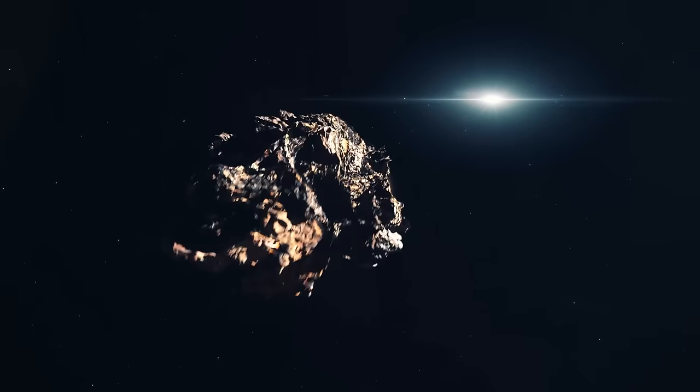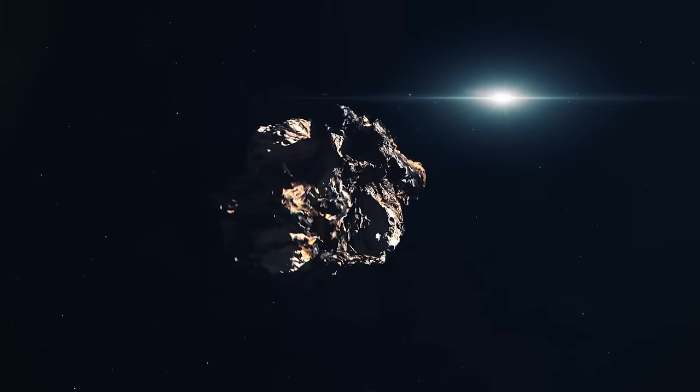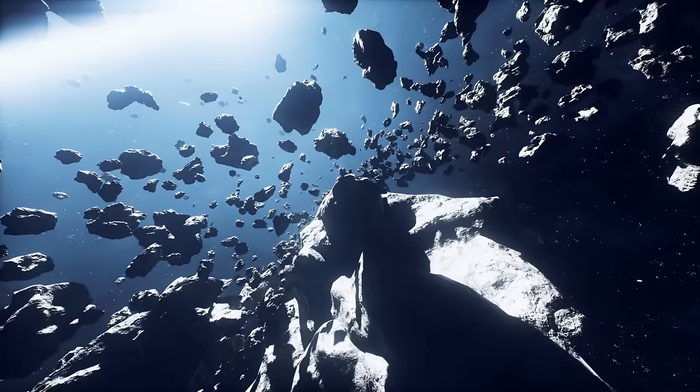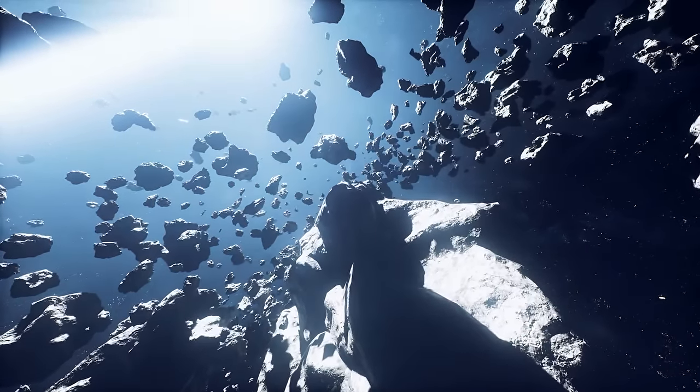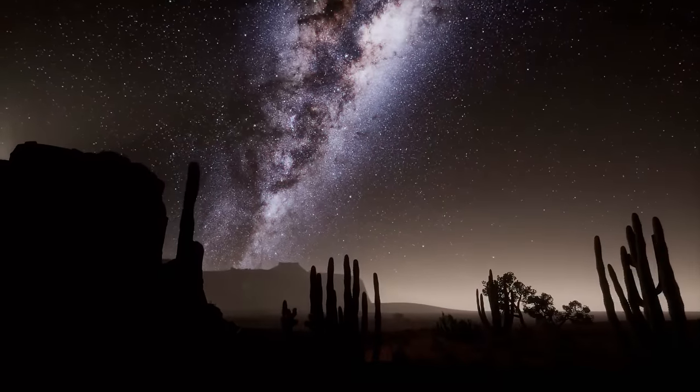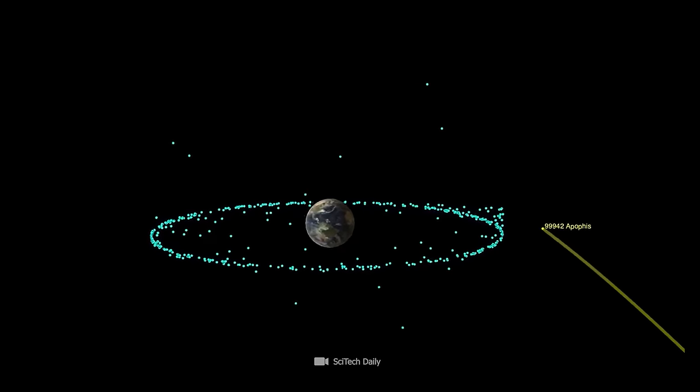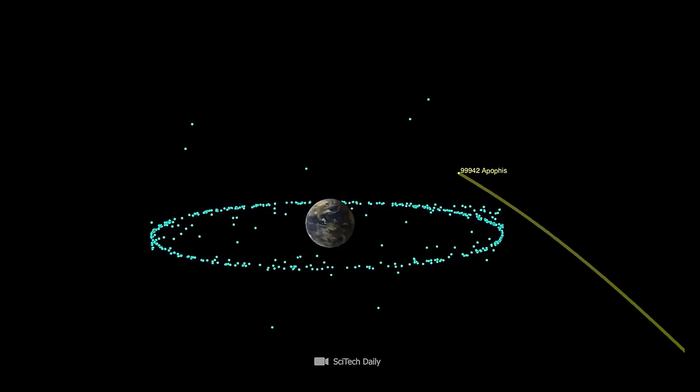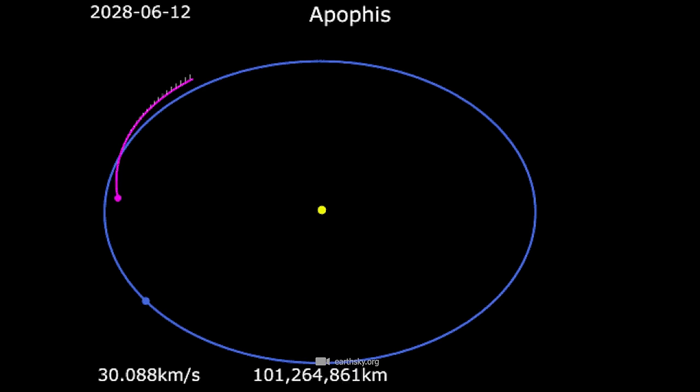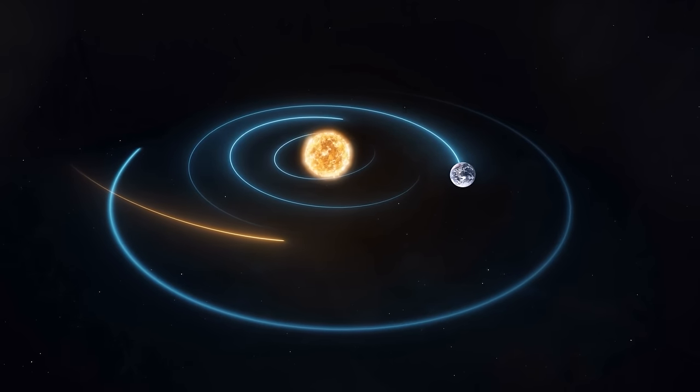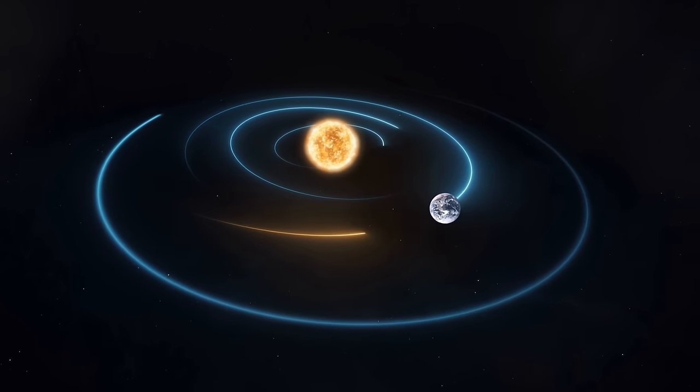Asteroids are flying treasure troves for astronomers, and we simply need to know more about them in order to better understand the evolution of our solar system. By combining radar observations and optical astronomy, researchers have already determined the orbit of Apophis fairly accurately. This new data has helped to determine the asteroid's orbit more precisely, and to better estimate the probability of a future impact on Earth.